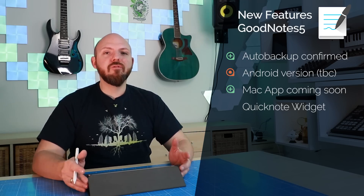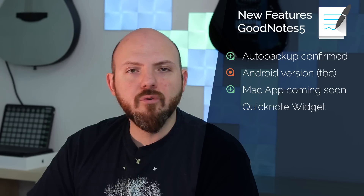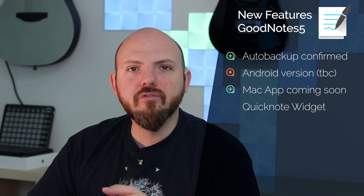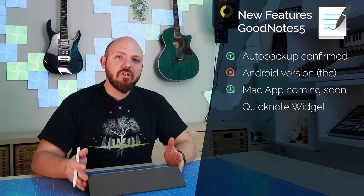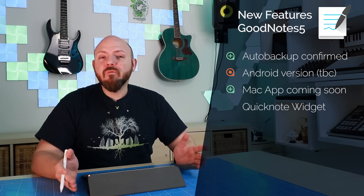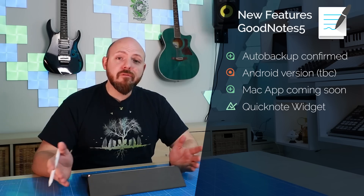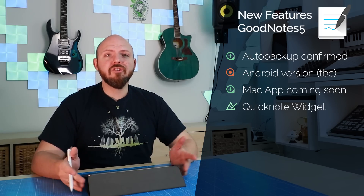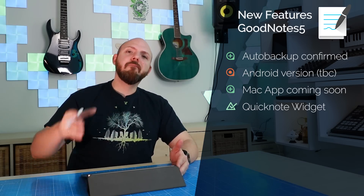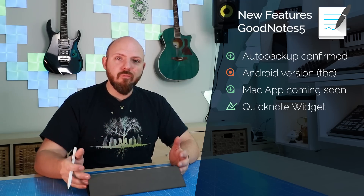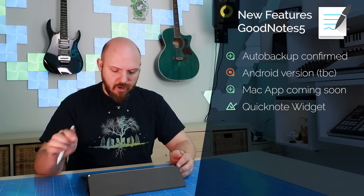One workaround NoteShelf 2 already shows is a built-in widget for quickly accessing notebooks or creating a quick note. GoodNotes doesn't have a widget yet, but there's a workaround using Apple's native Shortcuts app — you can create a shortcut for GoodNotes 5 and place it in your widget list.